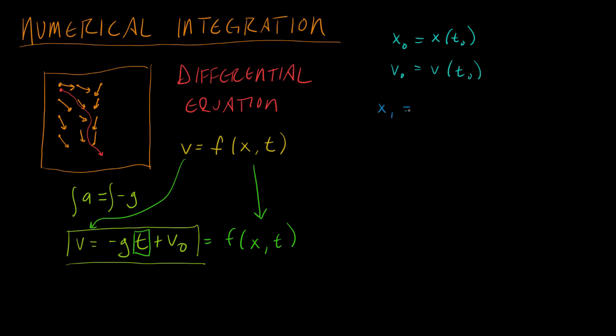x1 is the position of the object at the next time. That would be the position at the last time plus the velocity at the last time times delta t, which is the change in time between. So t1 minus t0 equals delta t.